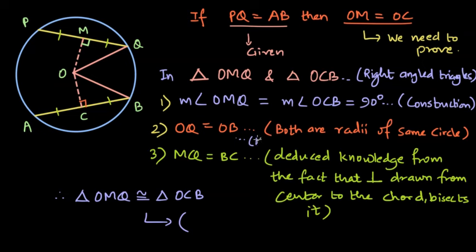This was the hypotenuse. We already showed one other element of both the triangles to be equal as well, which is MQ equal to BC. Therefore this is hypotenuse side test.